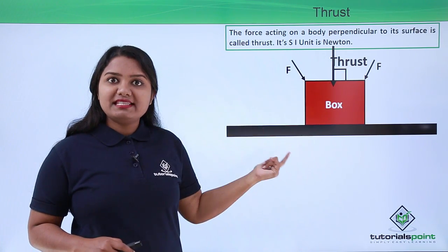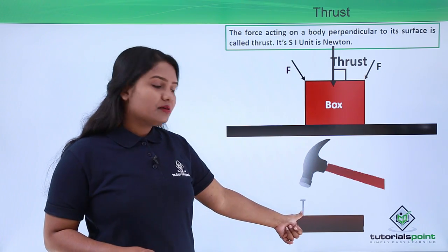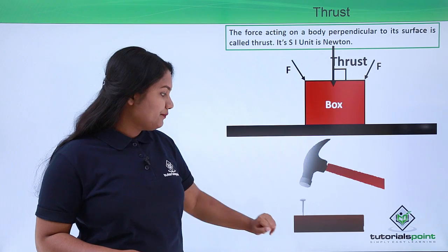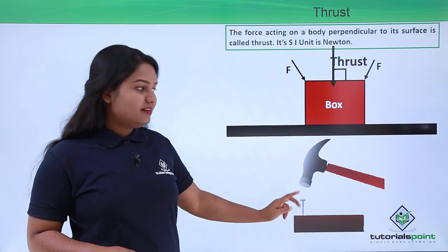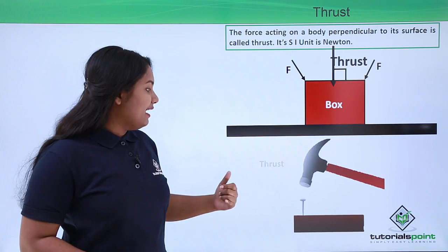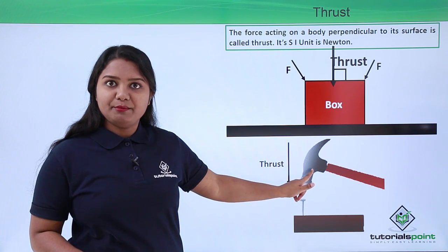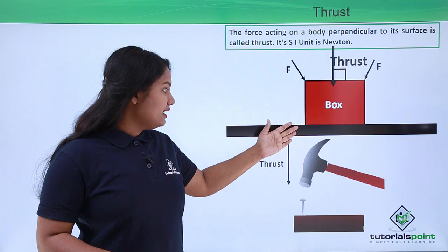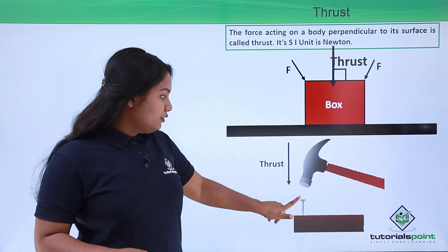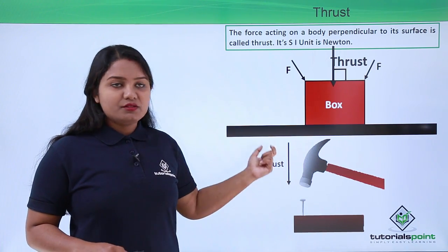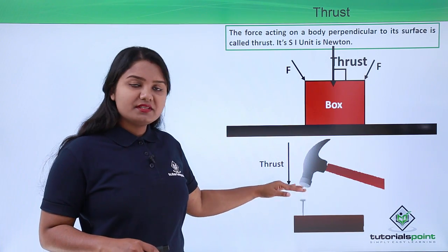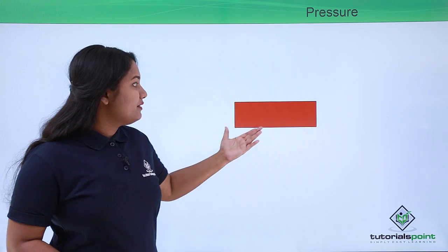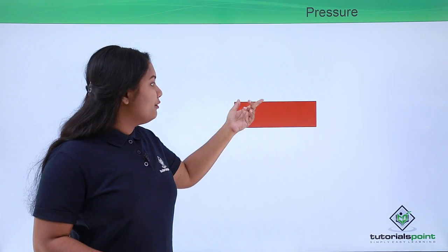For example, suppose we have a nail and we use a hammer to drive it into a wooden block. When we hit the nail with the hammer, we apply a thrust to the nail. We call this force thrust because it is perpendicular to the top surface of the nail.